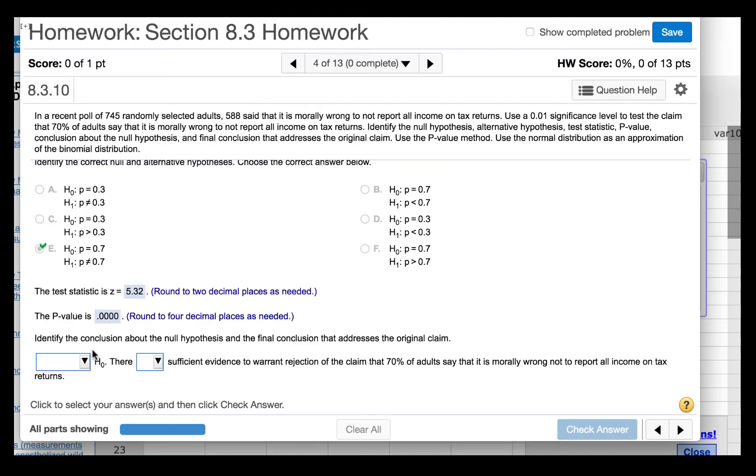We are now to identify the conclusion about the null hypothesis and the final conclusion that addresses the original claim. Since our p-value is less than our alpha level of 0.01, we should reject the null hypothesis. So there is sufficient evidence to warrant rejection of the claim that 70% of adults say that it is morally wrong not to report all income on tax returns.